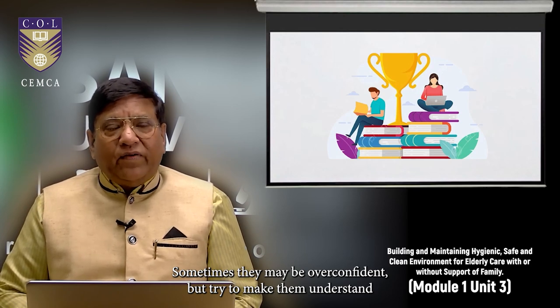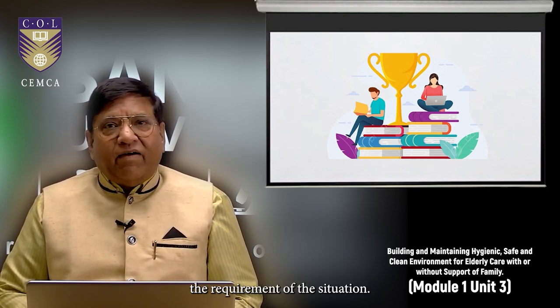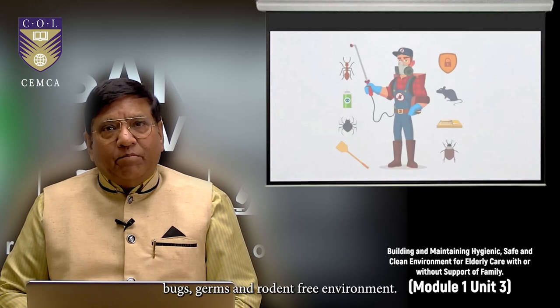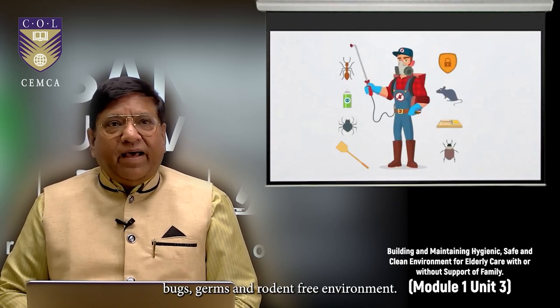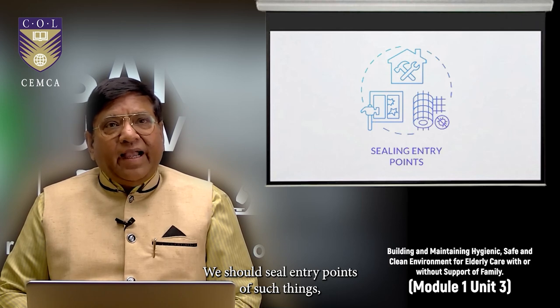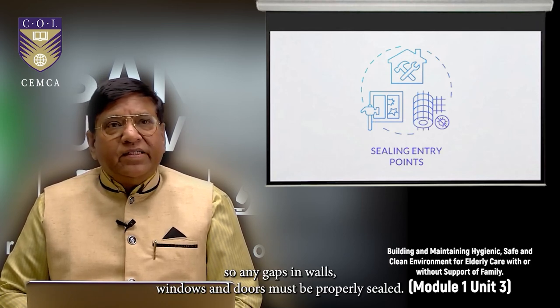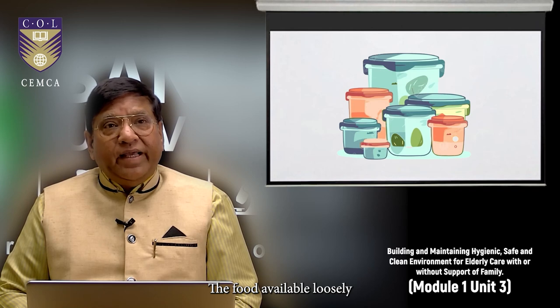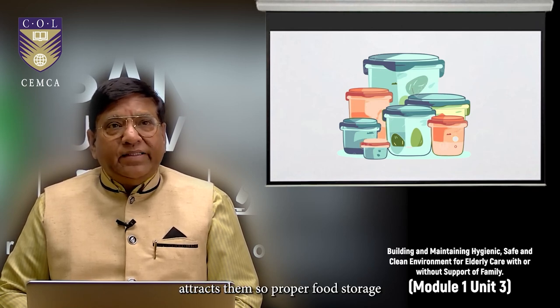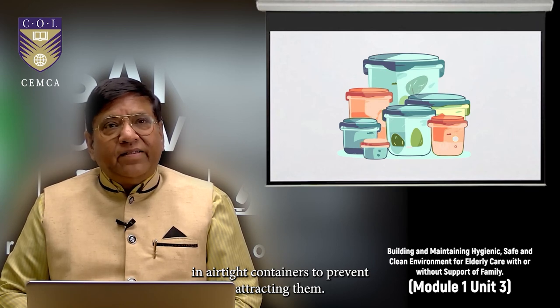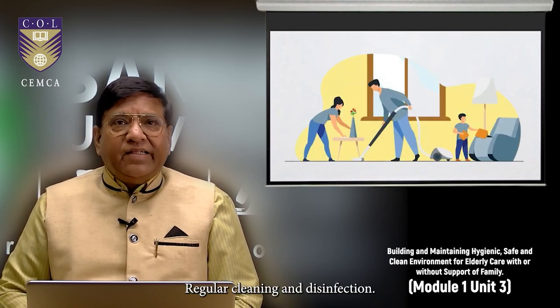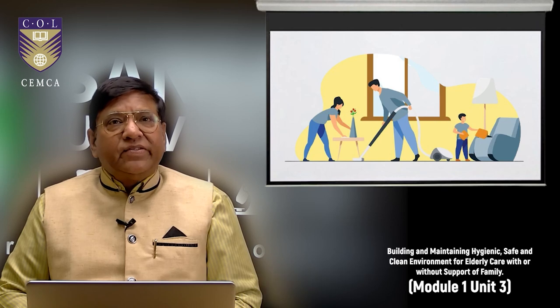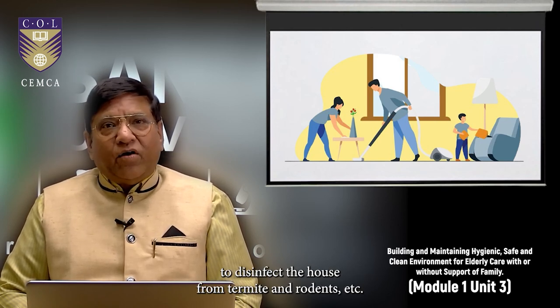Accessibility and arrangement. Ensure commonly used items are within reach and we should organize furniture to provide clear pathways. Education and awareness. Educate them about potential hazards and promote the use of assistive devices if needed such as canes or walkers. Sometimes they may be overconfident but try to make them understand the requirement of the situation. Next, we come to the third segment that is maintaining bug, germ and rodent free environment. We should seal entry points of such things. Any gaps in walls, windows and doors must be properly sealed. The food available loosely attracts them. Proper food storage in airtight containers to prevent attracting them.